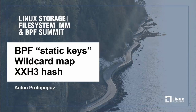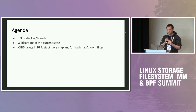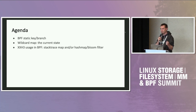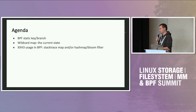I have three topics for today — maybe not three. I have a slot tomorrow for hash functions. But one thing is BPF static key or branch. There are static keys in the kernel, and it would be cool to use them in BPF. Then there is an update on the wildcard map: what it is, some use cases, and some benchmarks. And tomorrow I'll follow on how to use different hash functions for different BPF maps.